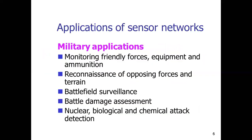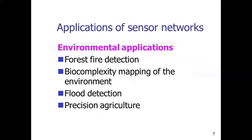What are the applications of sensor networks? Sensor networks are used in many applications. In military applications, they are used to check battlefield surveillance, battle damage assessment, and nuclear, biological, and chemical attack detection. They are also used in environmental applications such as forest fire detection, flood detection, and precision agriculture.